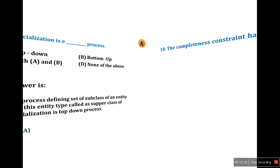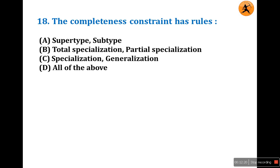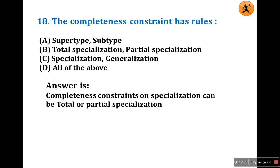Question number 18: The completeness constraint has rules involving super-type, sub-type, total specialization, and partial specialization. The completeness constraint on specialization can be total or partial specialization. Answer is B.